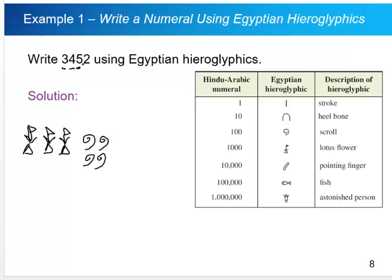There's five tens, so we want five heel bones. And then finally two ones, so two strokes.